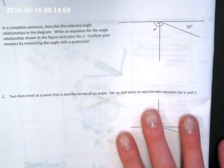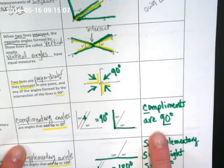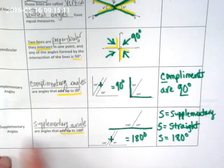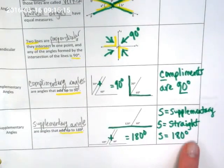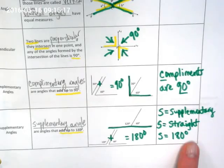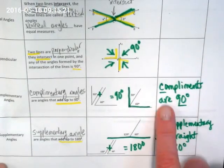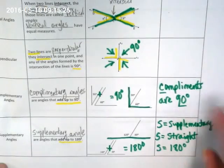Today we're going to use what you know about complementary and supplementary angles. Let's just quickly review what that is. Complementary angles add up to 90 degrees. Supplementary angles are 180 degrees. We can remember that by supplementary equals straight lines and complementary is 90 degrees or corners.